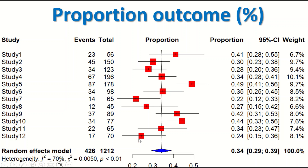In the first section is the description of the data: 12 studies, the events in each study, the total number of participants, and the calculated proportion for each study with a 95% confidence interval and a weight percentage for each study based on the sample size.